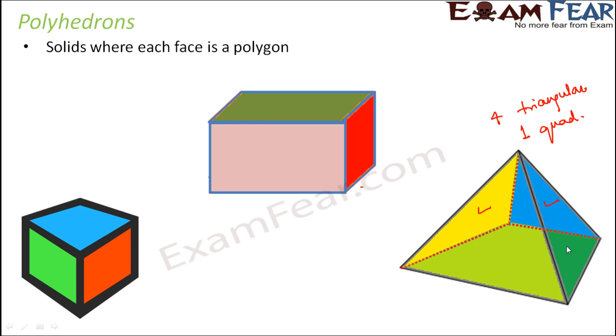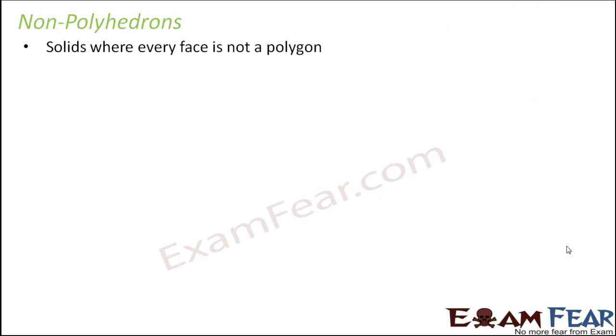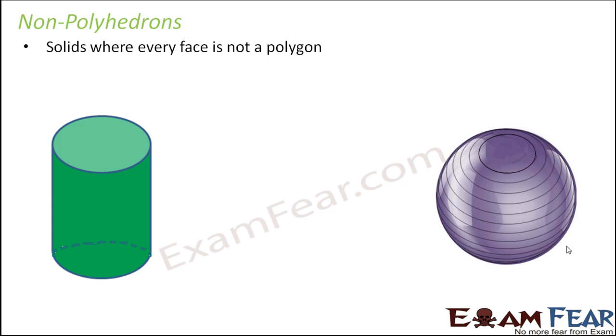Now let's look at some examples which are not polyhedrons - solids where every face is not a polygon. For example, the cylinder. Is it a polyhedron? When you look at the cylinder, the top and the bottom faces are circles. Now, circle is not a polygon because polygon is that closed figure which is made up of line segments, and circle is definitely not made up of line segments.